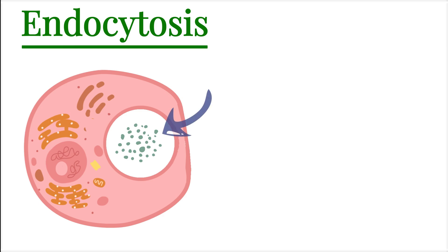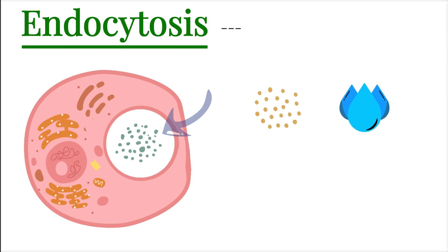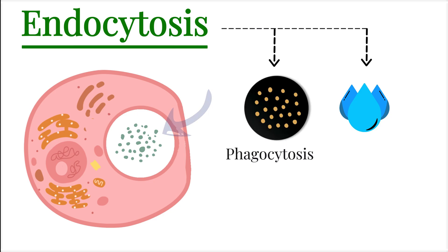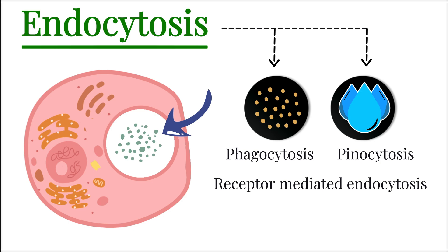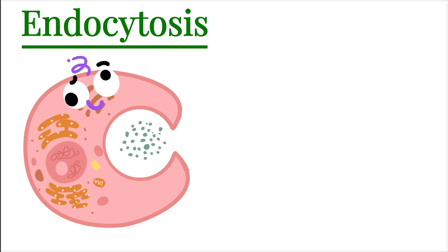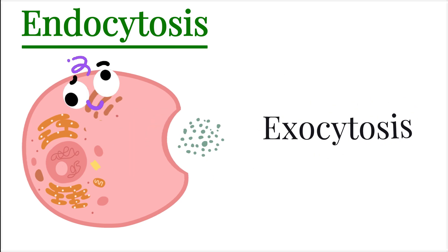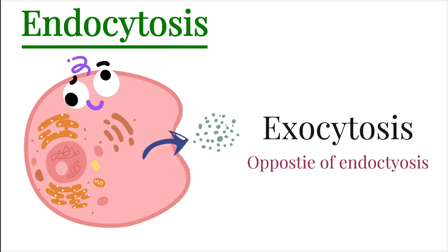The material transported into the cell can be solid or liquid, and based on this, endocytosis is divided into two main types: phagocytosis, when the cell engulfs solid particles, and pinocytosis, when the cell takes in fluids. We'll also talk about a specialized form called receptor-mediated endocytosis, which is highly specific and efficient. And finally, I'll explain the opposite process, called exocytosis, where substances are sent out of the cell.